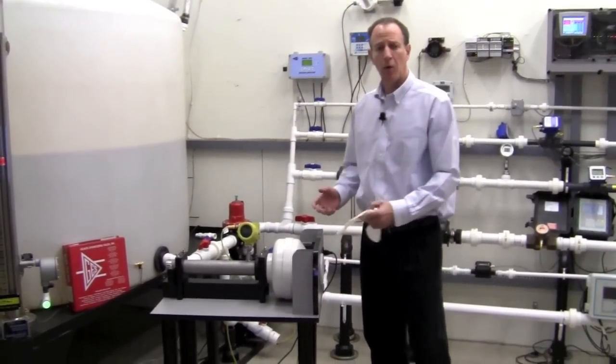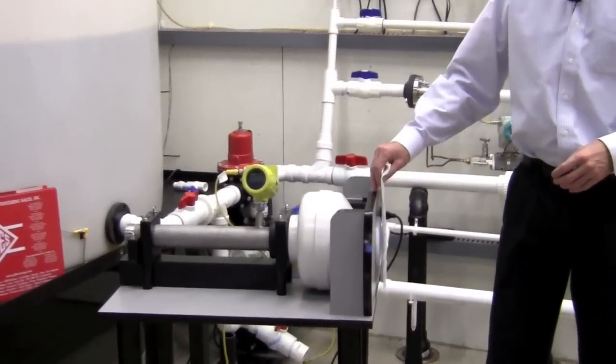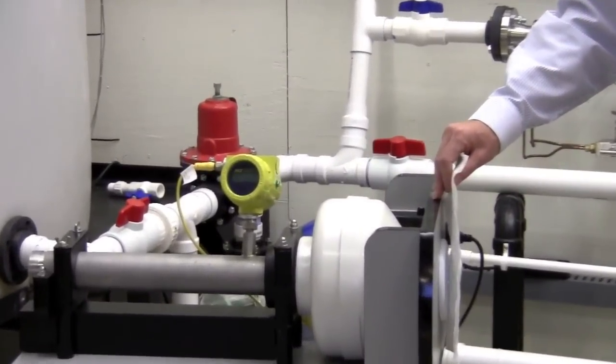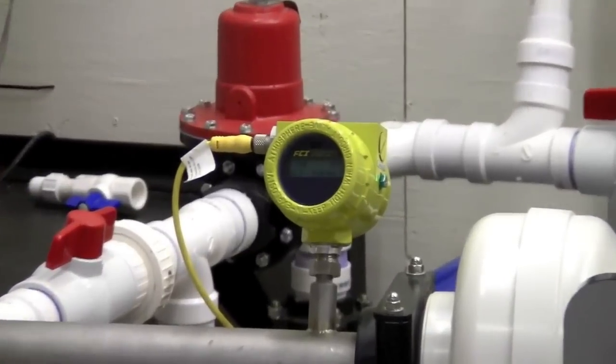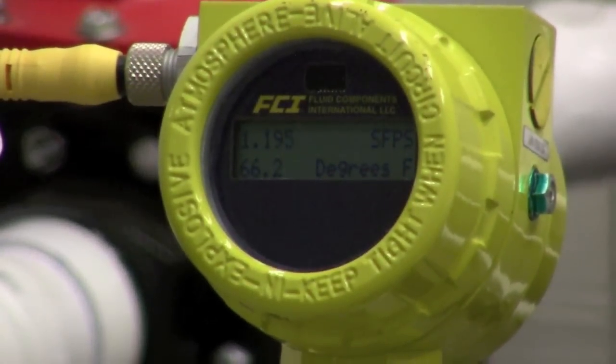With a blower on the lowest speed setting, barely enough to move this paper napkin, we're still registering flow. The ST series of flow meters will measure flow down to one foot per second.